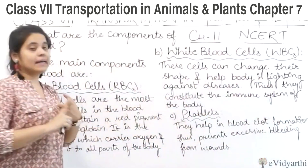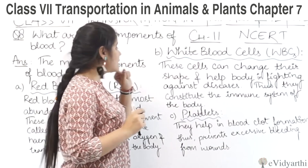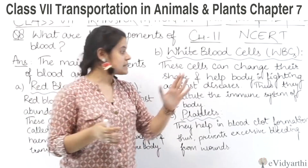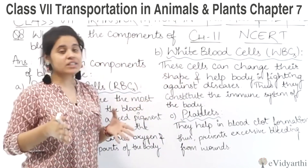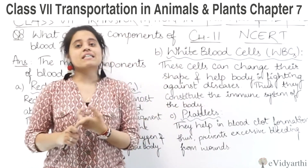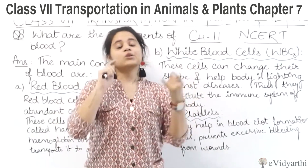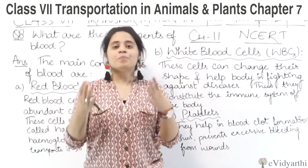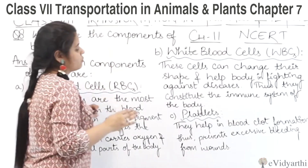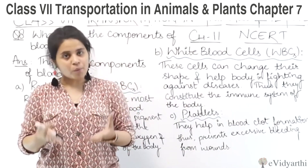Next, white blood cells. These cells can change their shape. And important jo feature hai, isna function kya sakti hain — it helps the body in fighting against diseases. Koi bhi chhoti bhi disease ho, toh yeh white blood cells hi hain jo us germ se fight karti hain. Thus they constitute the immune system of the body — jo hamaari body ka immune system hai, uska important part hai.